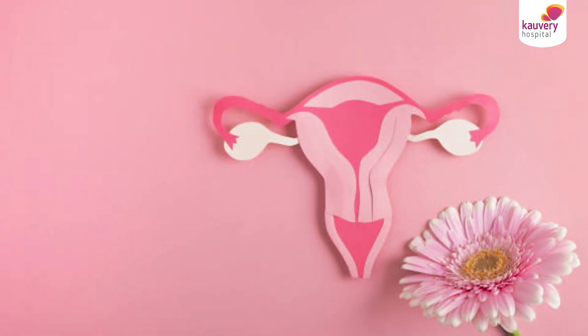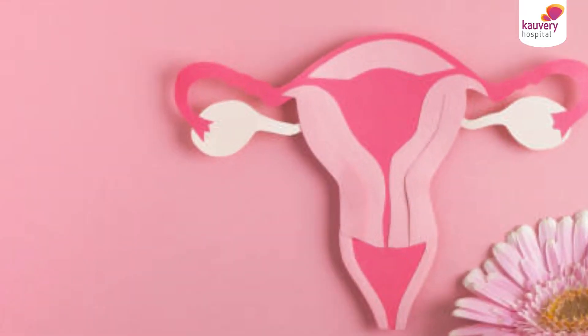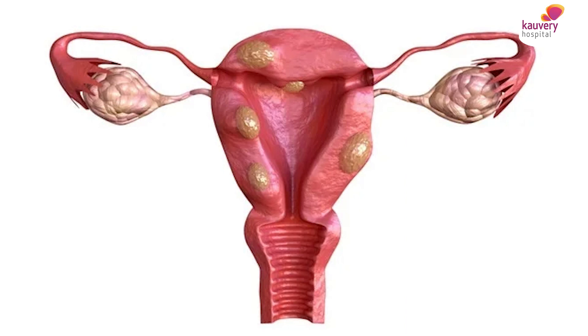Dr. Anita, Consultant Gynecologist, Kaveri Hospital. Today we are going to discuss common benign conditions in the female reproductive system. So what is called benign and what is called malignant? Benign conditions are growths or masses where the tendency to become malignant — cancer — is not there and mostly it will not be there. So when you are diagnosed with any benign condition, you should consult your gynecologist and undergo the treatment offered to you.